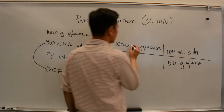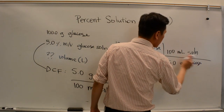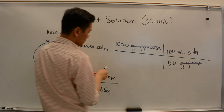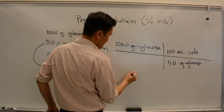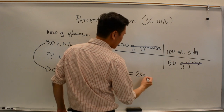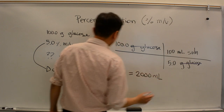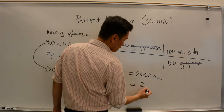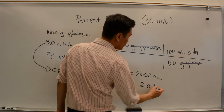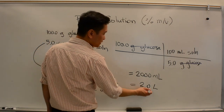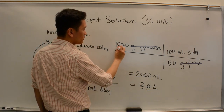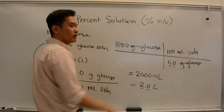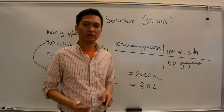If we do that, the grams of glucose cancel, giving us milliliters of solution: 2,000 milliliters. But we want the answer in liters, so that's 2.0 liters. Why 2 sig figs? We have 3 sig figs in 100 grams and 2 sig figs in 5.0%, so our answer has 2 significant figures: 2.0 liters.